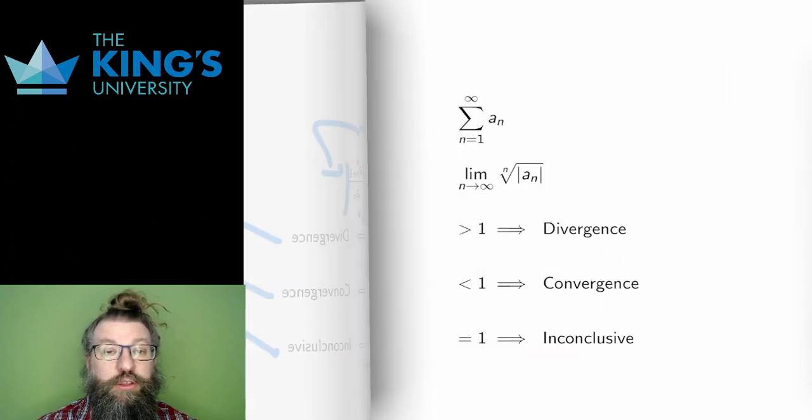And to be complete, the third test is very similar, which is going to be the last test for this week. And instead of ratios, it takes the nth root of the absolute value. So instead of the ratios of the n+1 and nth term, it's just the nth root of the nth term. But the criteria less than 1, greater than 1, equal to 1 are exactly the same.